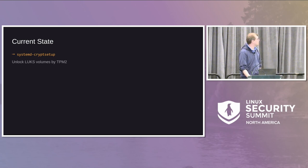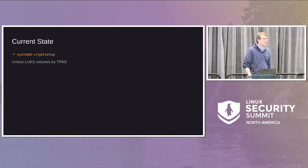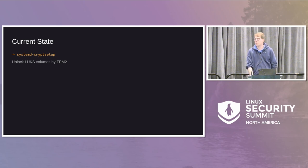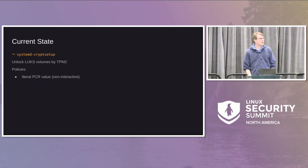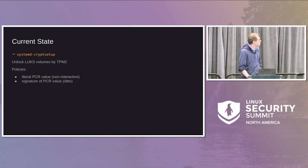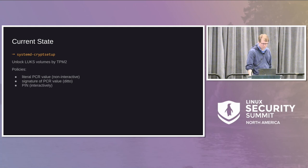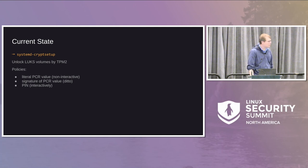The obvious use is to unlock LUKS volumes by TPM2. We do it a bit differently than previous solutions because we actually extend the LUKS superblock with our data, so it feels more natural — you don't have to store anything in NV indexes or elsewhere. All information needed is included in the LUKS superblock and nowhere else. The relevant TPM policies we implement are: one based around literal PCR values, one based on signatures of PCR values using extended authentication, and a PIN-based one that is interactive during boot. You can also have a combination of these.